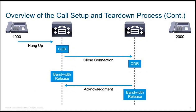Then for the teardown process, let's say the user who initiated the call has just hung up. As it hangs up, the CDR will make sure that a close connection request is sent to the other phone. Any phone out of these two — whether it's the calling party or the called party — if one of them hangs up, a close connection is sent to the other. Then the bandwidth consumed for this session will be released and an acknowledgement is sent back. Both sides of the bandwidth will be released and the call will be torn down.